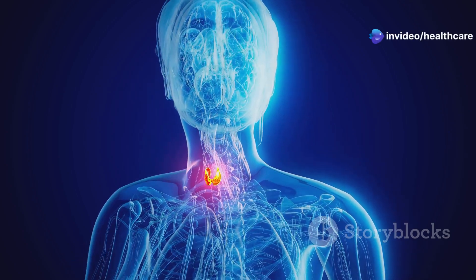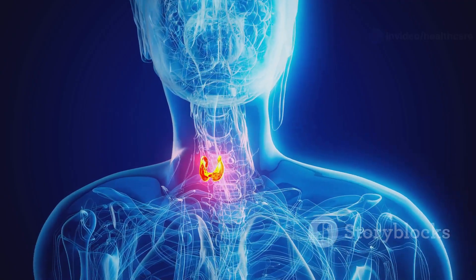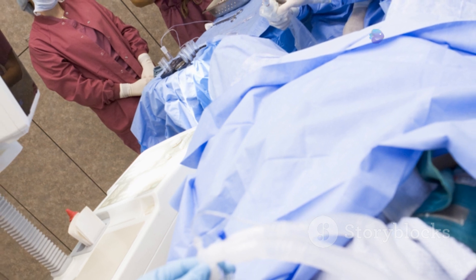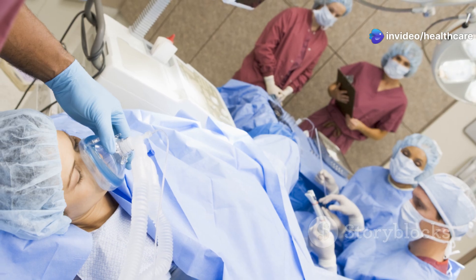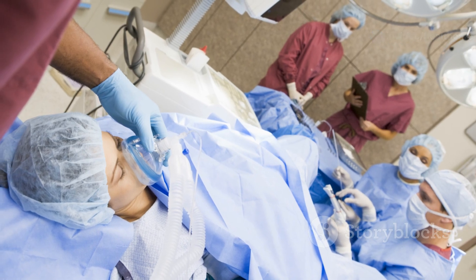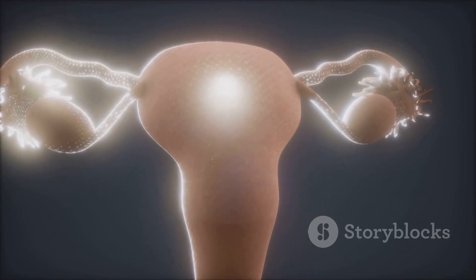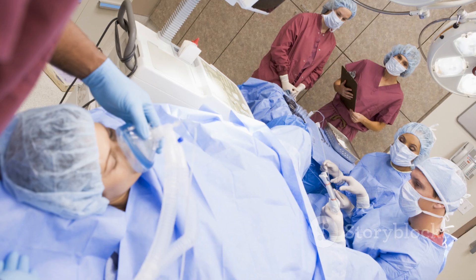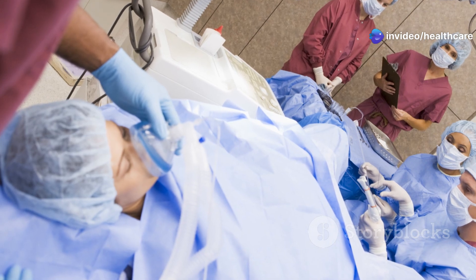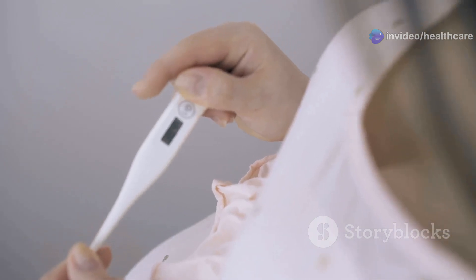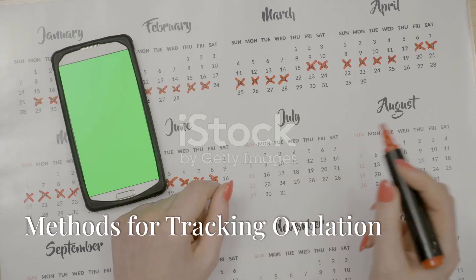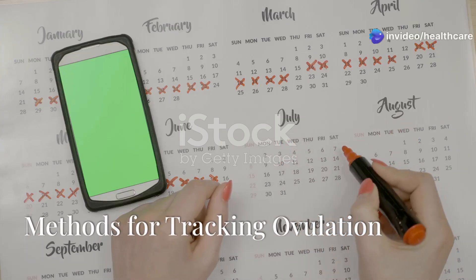The pituitary gland, in response to GnRH, releases two key hormones: follicle-stimulating hormone (FSH) and luteinizing hormone (LH). FSH stimulates the growth and development of follicles in the ovaries — each containing an immature egg. LH plays a crucial role in triggering ovulation itself. Around the middle of the menstrual cycle, a surge in LH signals the ovary to release the mature egg. This LH surge is what ovulation predictor kits are designed to detect.